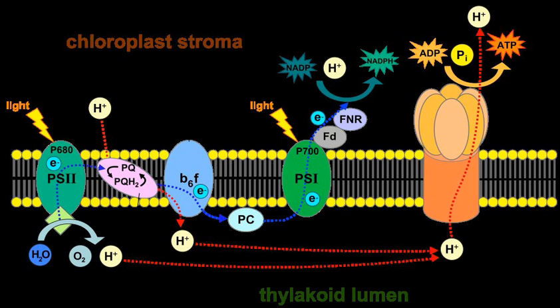The overall process of the photosynthetic electron transport chain in chloroplasts is: H2O → PSII → Plastoquinone → CYT B6F → Plastocyanin → PSI → NADPH.